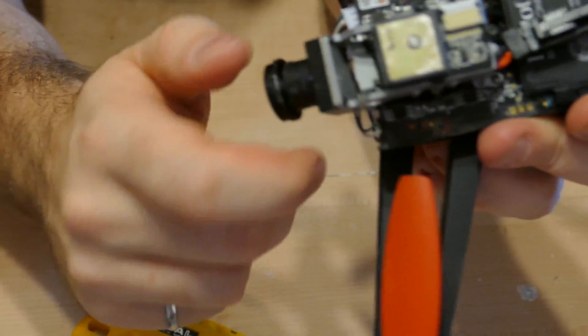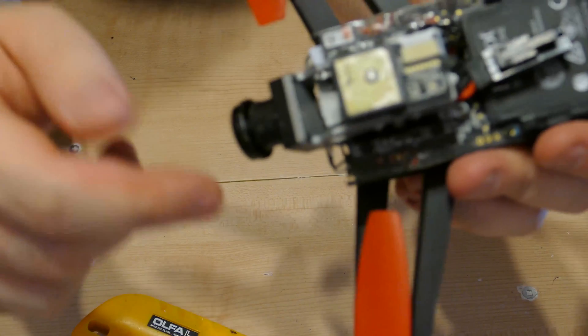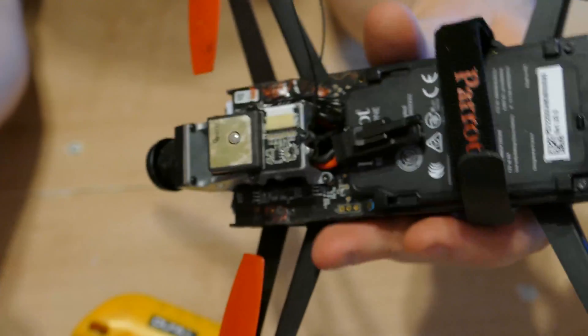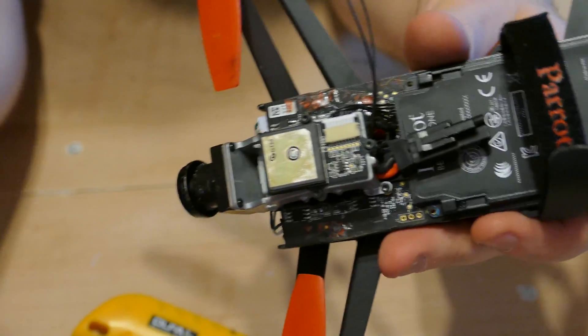At this stage you want to put the battery on and connect your drone with your smartphone to see the picture quality, and then you have to keep twisting. But be careful because all the electronics are exposed.